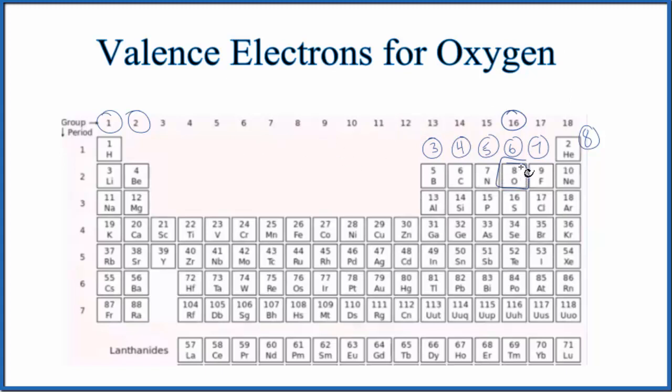So oxygen has an atomic number of eight. That means it has eight protons. And since it's a neutral atom, all of these are neutral atoms, it'll have eight electrons, eight total electrons.